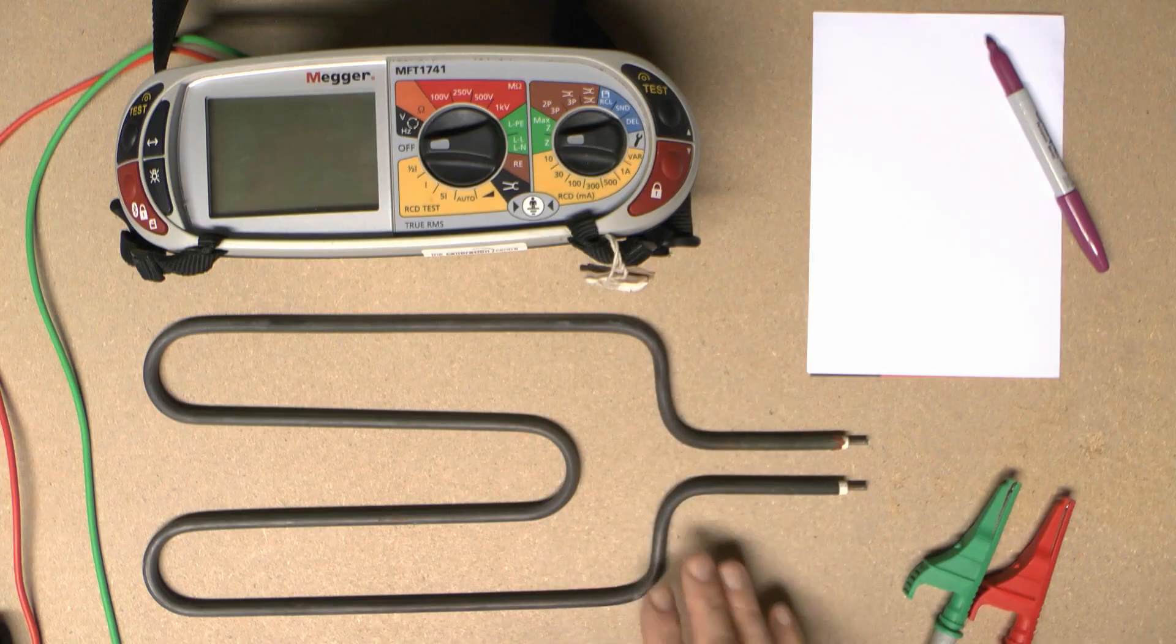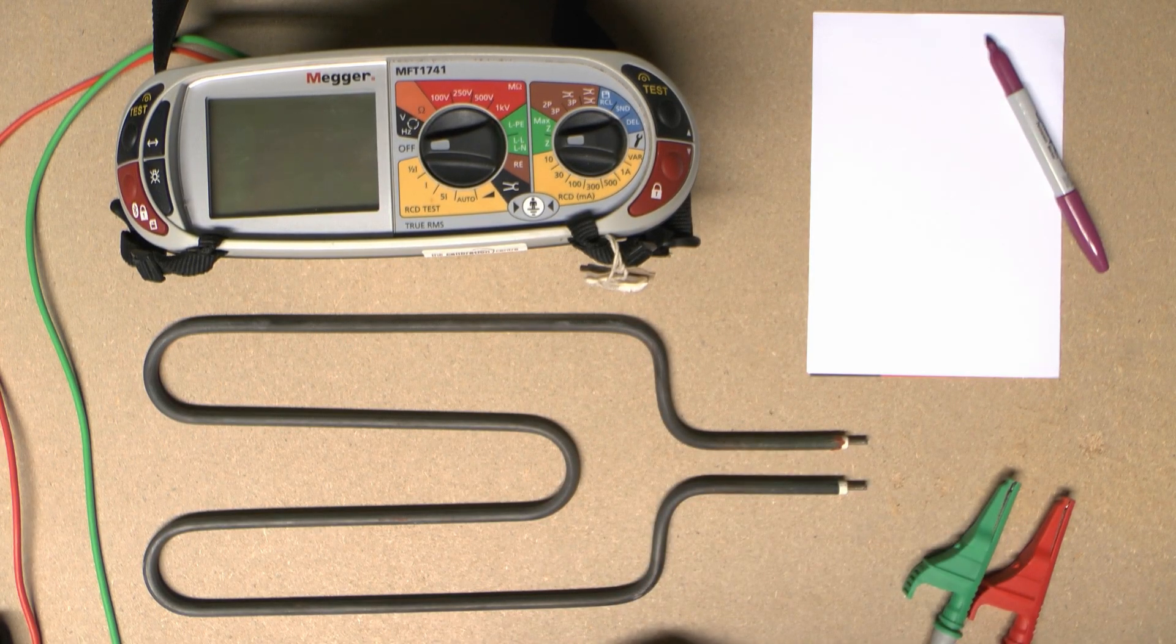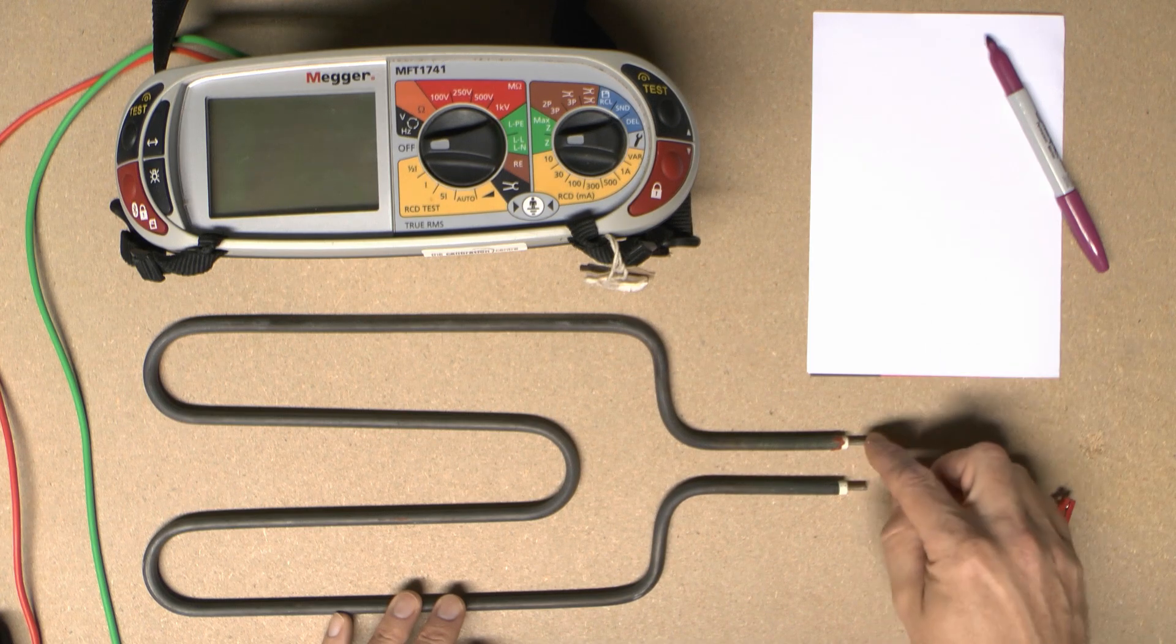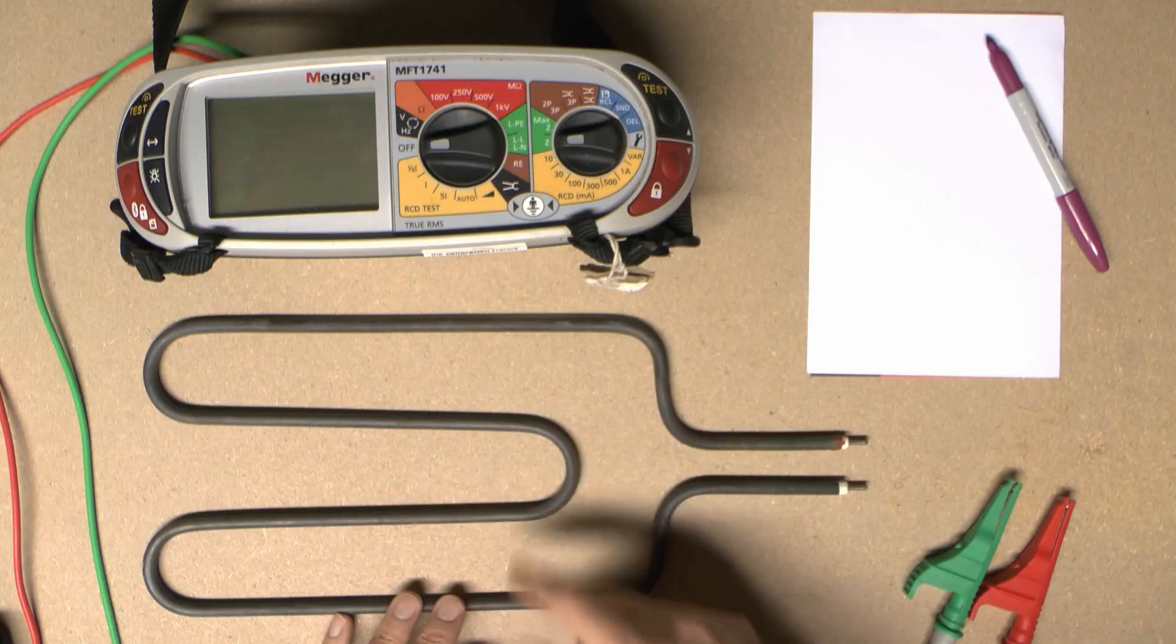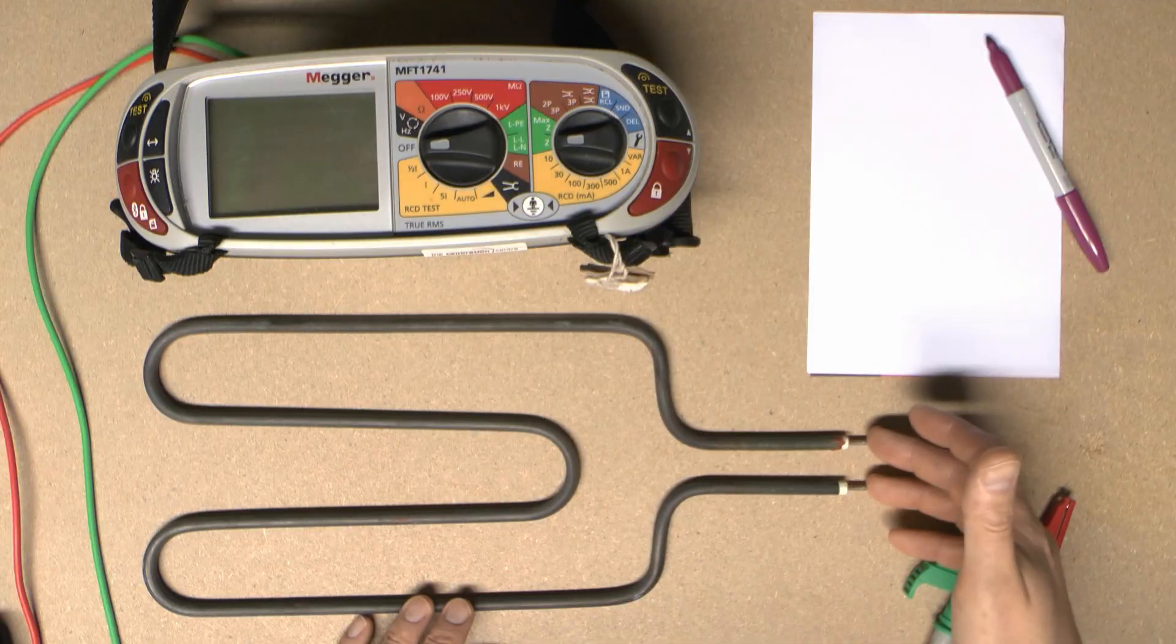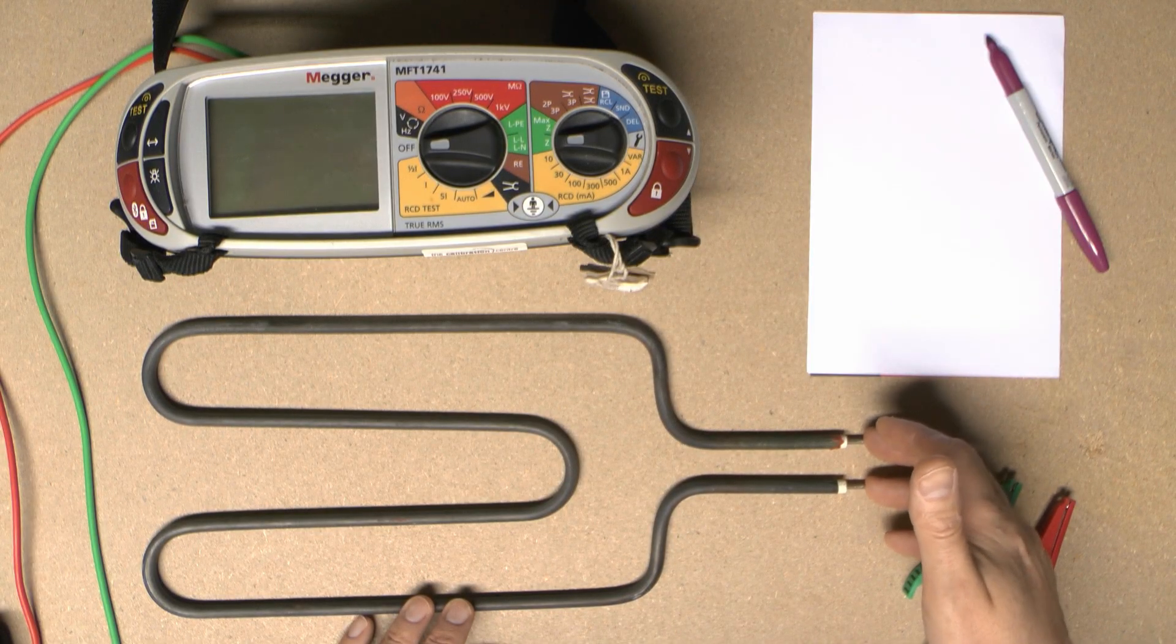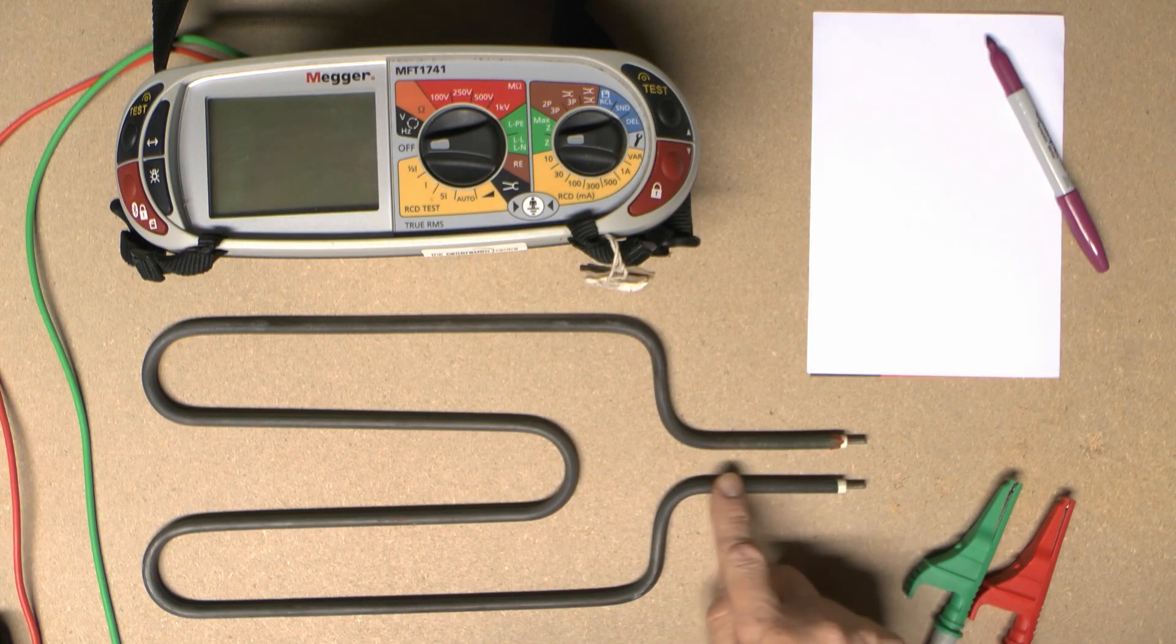We've got a heating element here from a storage heater, but all elements are pretty much the same in construction. You have two pins or connections at one end, line and neutral, and it doesn't matter which way round those go because it's just a resistive wire inside. Then you have some kind of metallic covering over the whole thing. You should have a certain amount of resistance between the two pins where electricity is connected, and basically nothing between the pin and the metallic covering.